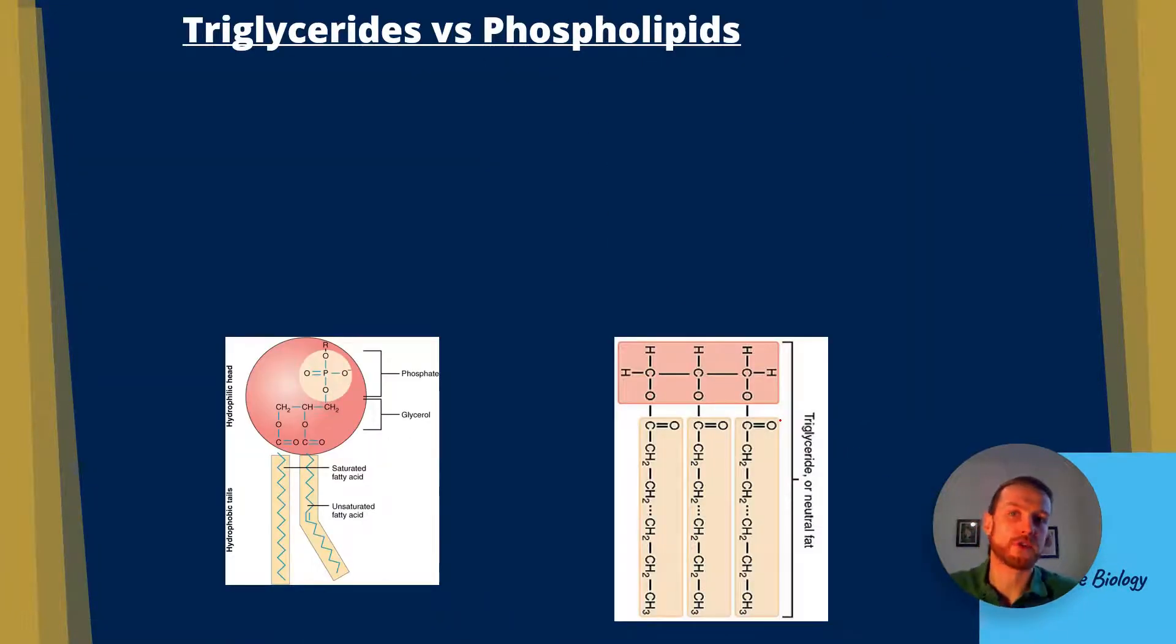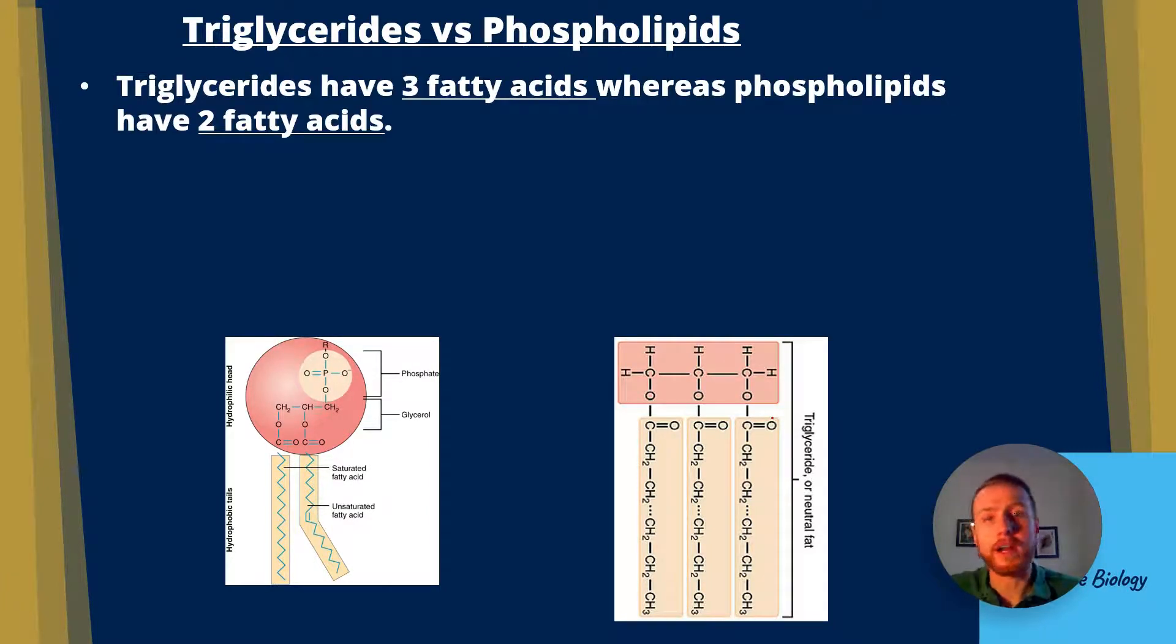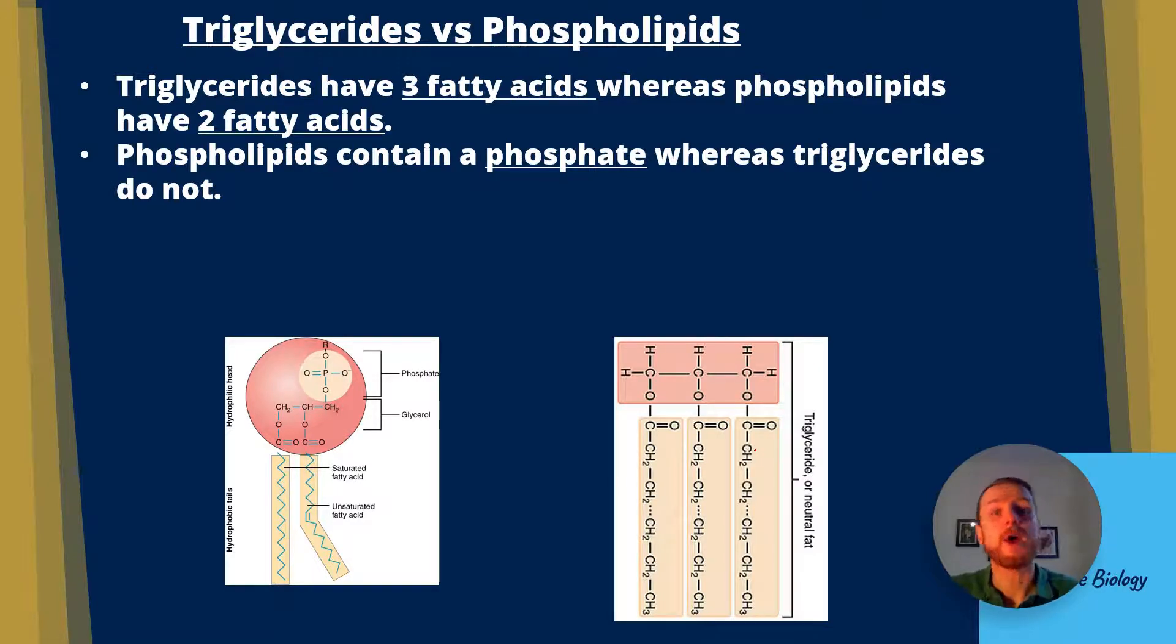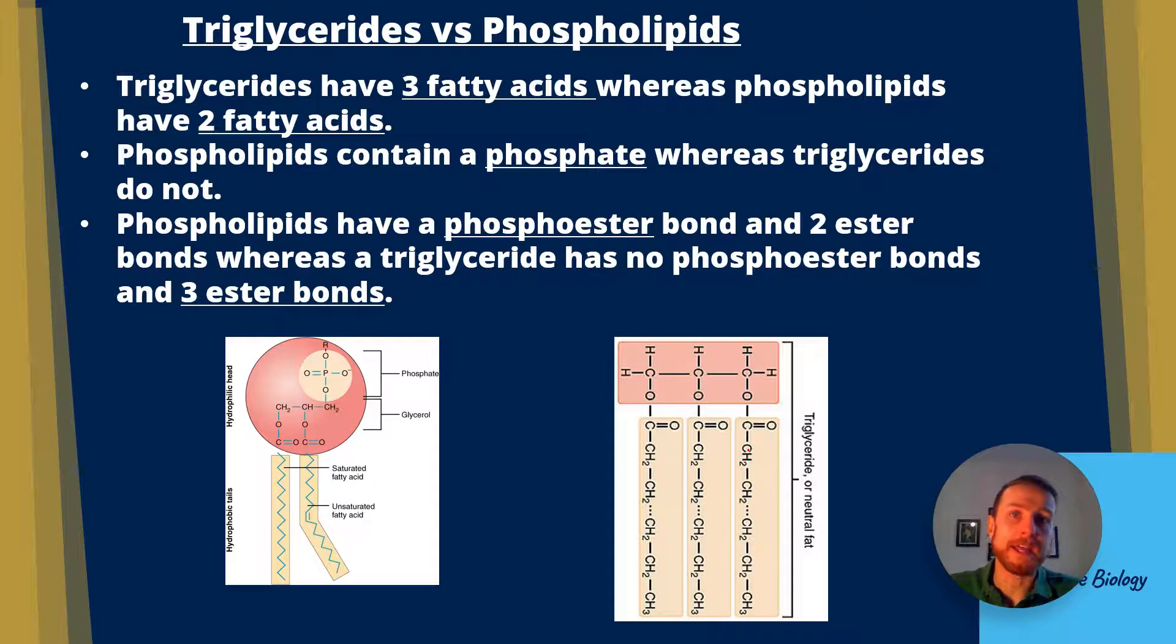Triglycerides versus phospholipids. This is a past paper question, actually. What's the difference between a triglyceride and a phospholipid in AQA A-level biology? First, triglycerides have three fatty acids, whereas phospholipids only have two. Next, phospholipids contain a phosphate, whereas triglycerides do not. Finally, phospholipids have a phosphoester bond between the phosphate head and the glycerol, and they have two ester bonds between the glycerol and the fatty acids. In contrast, triglycerides have no phosphoester bonds and three ester bonds.